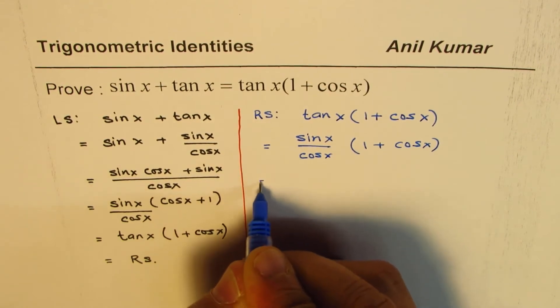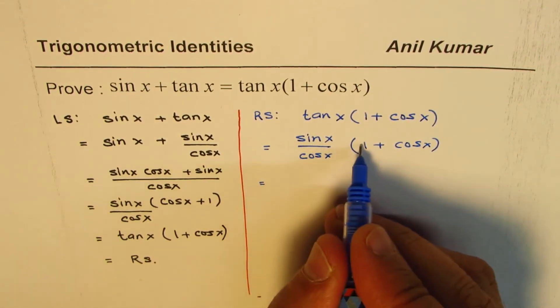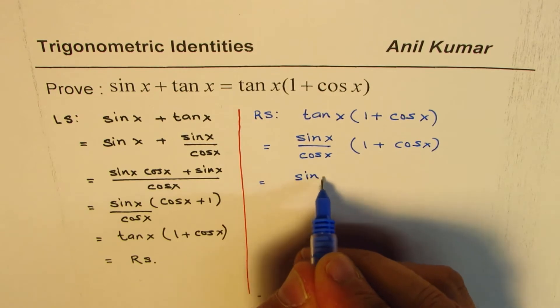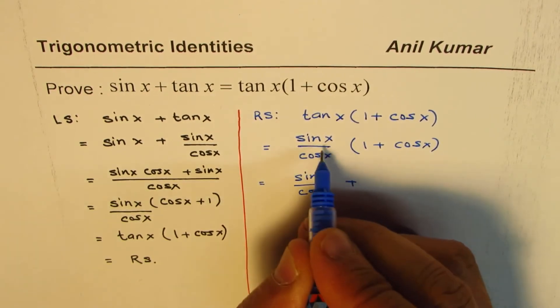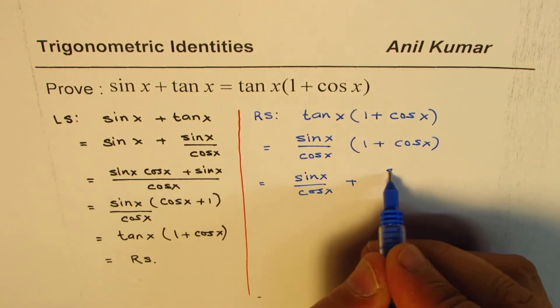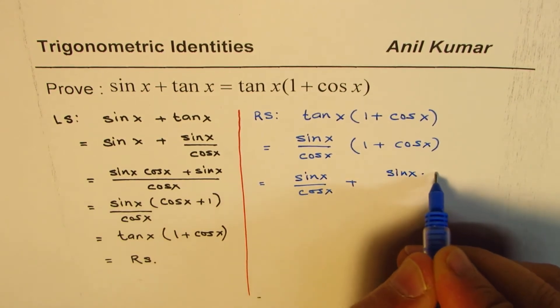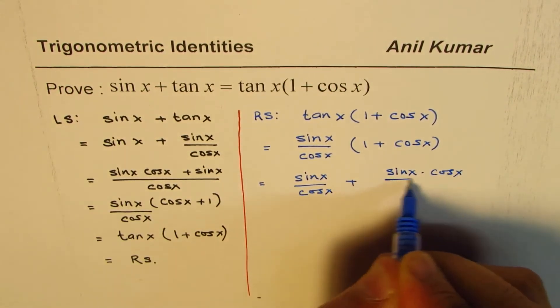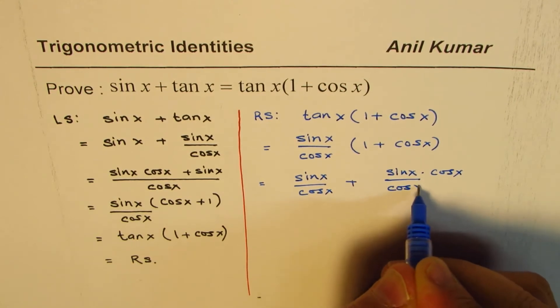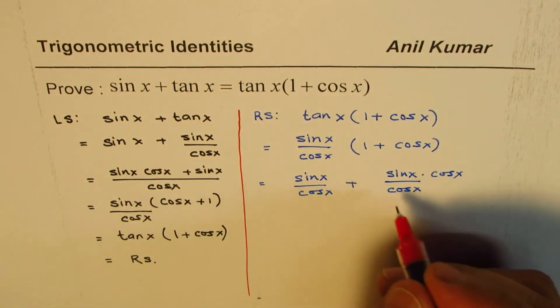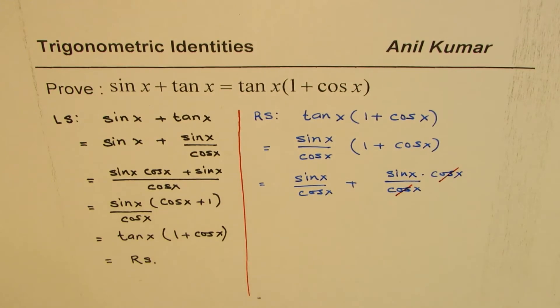Now let's apply the distributive property. So we get sin x over cos x plus multiplying with cos x we get sin x cos x over cos x. Now cos x cos x cancel out.